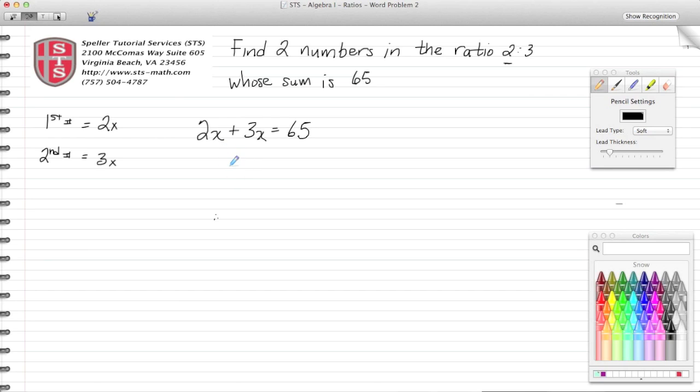2x plus 3x leaves us with 5x equals 65. Now we divide both sides by 5 and we're left with x is equal to 13. Now we take this value of 13 and we substitute it in for each one of our numbers.